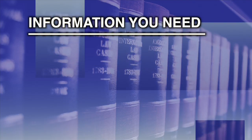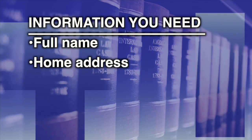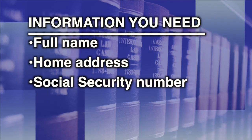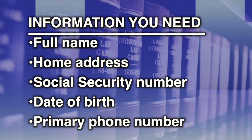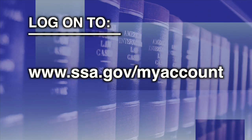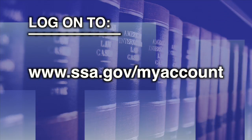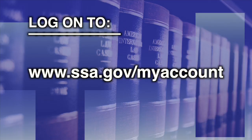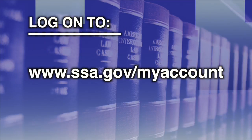You will need certain personal information about yourself: your full name, home address, Social Security number, date of birth, and primary phone number. Once you've gathered your personal information, access the Internet with a home computer, public computer at a library or school, or on your mobile device.